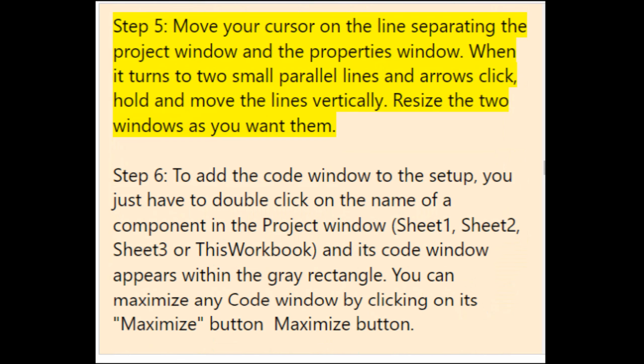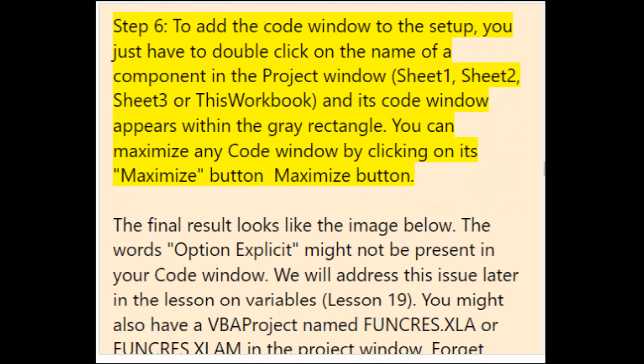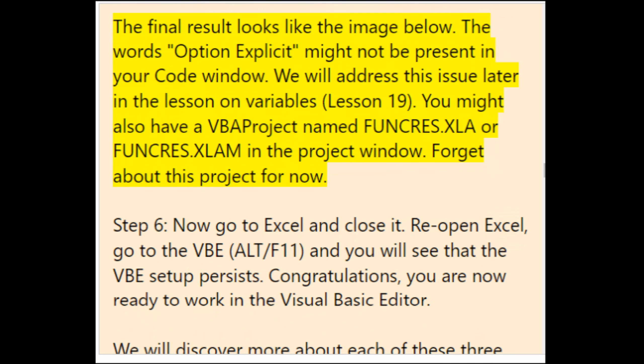Step 5: resize the Project window and Properties window by dragging the line separating them vertically. Step 6: to add the Code window, double-click a component name in the Project window (Sheet1, Sheet2, Sheet3, or ThisWorkbook) — its code window appears in the gray rectangle. You can maximize any code window by clicking its Maximize button. The words 'Option Explicit' may or may not be present — this will be addressed later in the lesson on Variables.